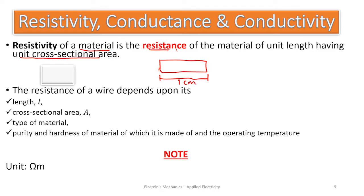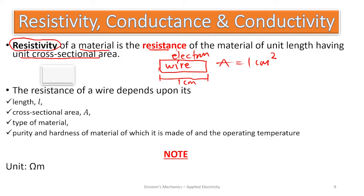We consider one centimeter of length and one centimeter squared of cross-sectional area. When we consider a one-centimeter length and one-centimeter-square unit area of this wire, how much resistance does this wire give to electrical energy or electrons? That ability is the resistivity of the material — the ability of this one-centimeter wire with one-centimeter-square area to resist or offer resistance to electrons.